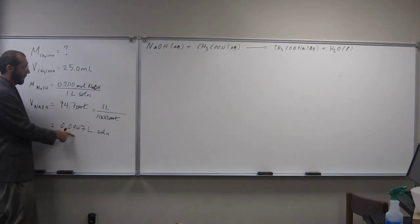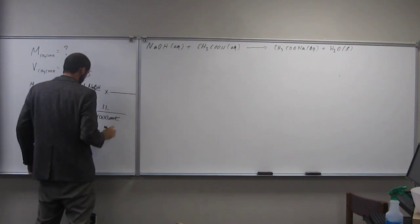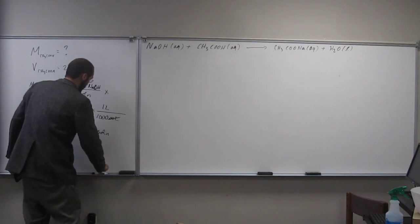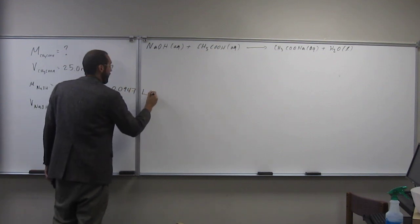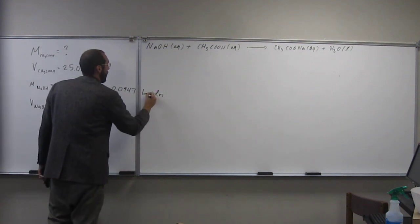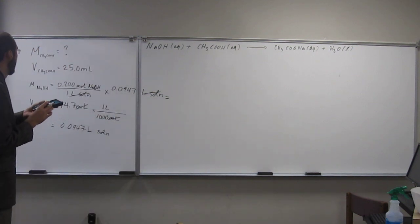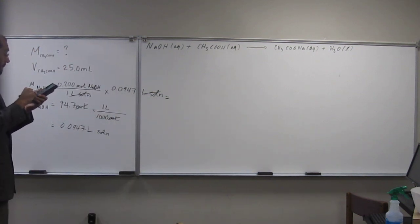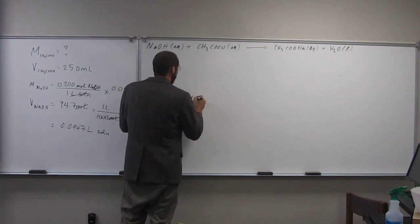So now we could probably figure out how many moles of NaOH we have in 94.7 milliliters, right? Do you think we could do that? So that should give us the moles of NaOH. Is everybody okay with that? We'll do this one step-wise. And again, you don't have to do this step-wise. You can do it all in one fell swoop like I was doing earlier.